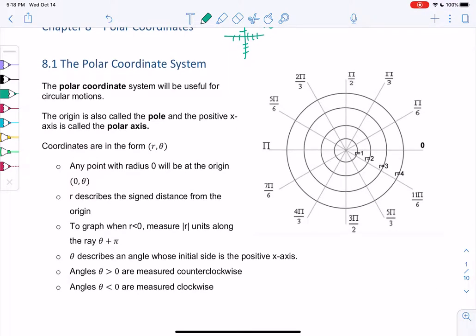The origin is now called the pole, that's the center. The positive x-axis is the polar axis. We don't have an x and y anymore, we just have a polar axis.